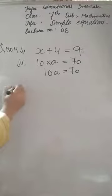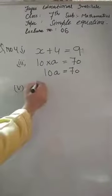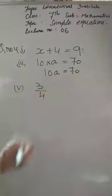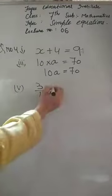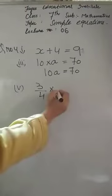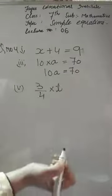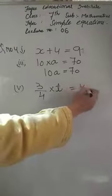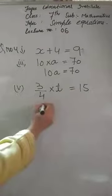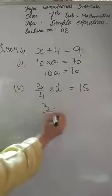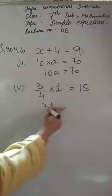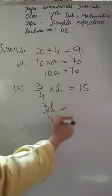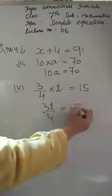Similarly, let's see the next part: 3 fourth of t — 3 fourth means 3 by 4, 3 divided by 4. '3 fourth of' means into t, where t is the variable — is equal to 15. That equals 3 by 4 into t, which is 3t by 4, is equal to 15.